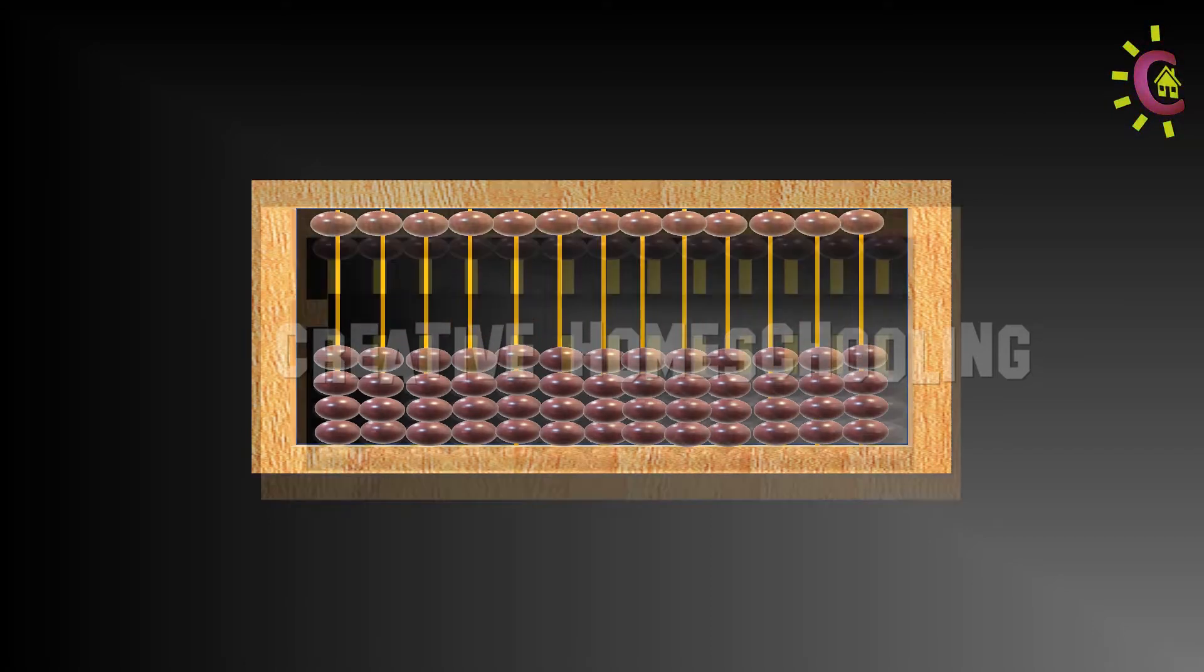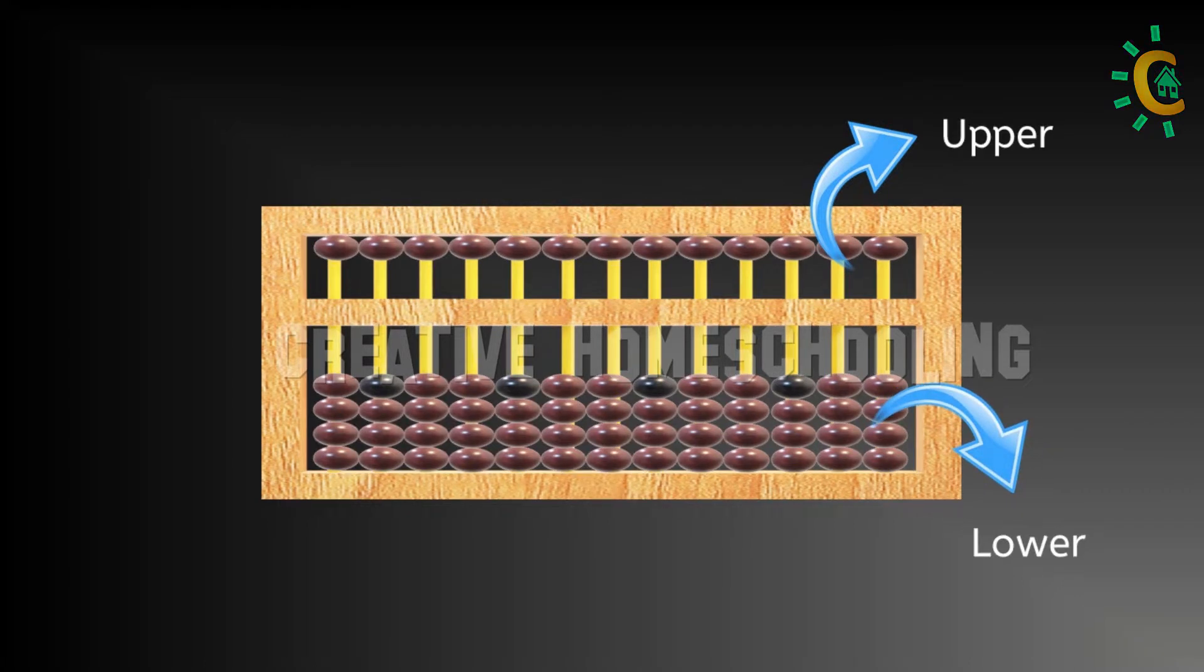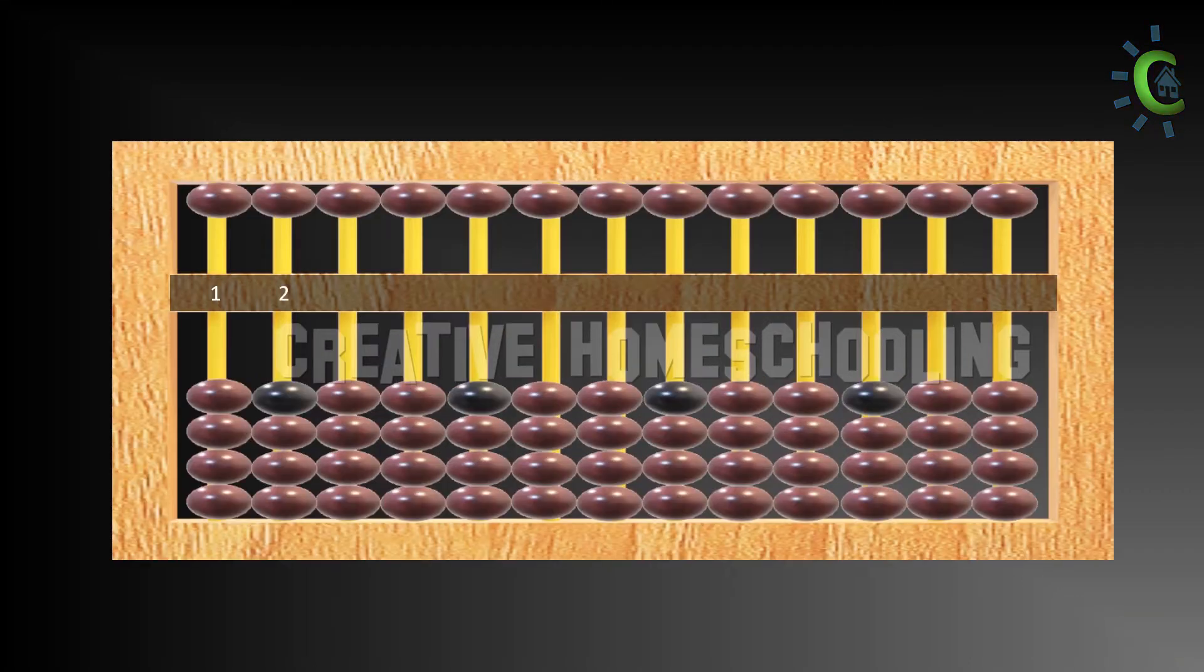A beam running across the frame divides the rods into two sections, upper and lower. We will be using a 13 rod abacus in this course.